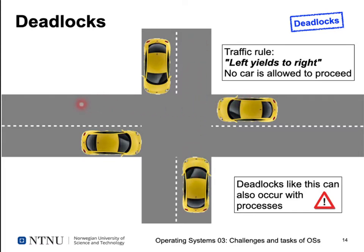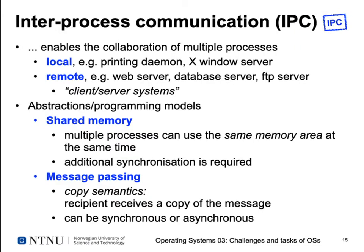When you want to communicate things between concurrent processes, we've already seen a very simple method — the mutex — which is just a memory location where we write a value to lock or unlock something. But maybe we want to exchange more information than just a bit indicating whether a resource is in use. More general methods for interprocess communication enable the collaboration of multiple processes. For example, you might have a printing daemon — one program that controls the printer — and text processing or graphics programs communicate with it to get things printed.